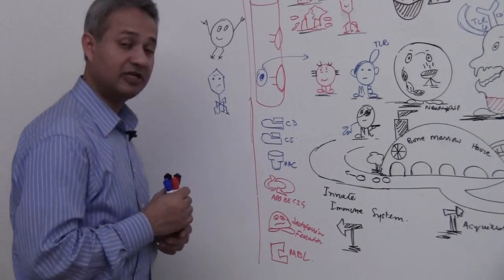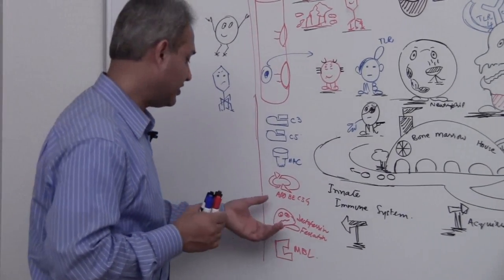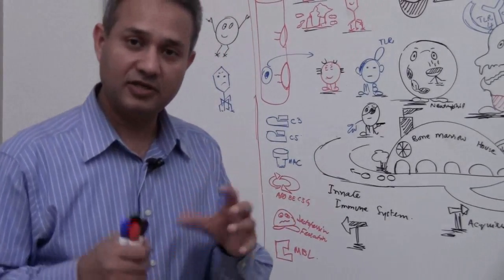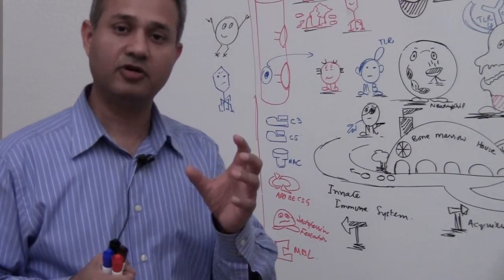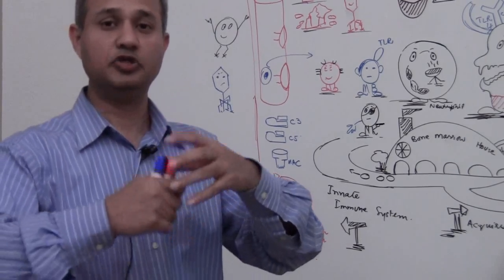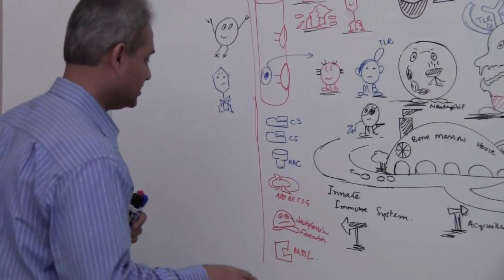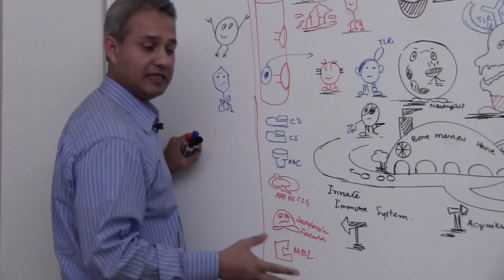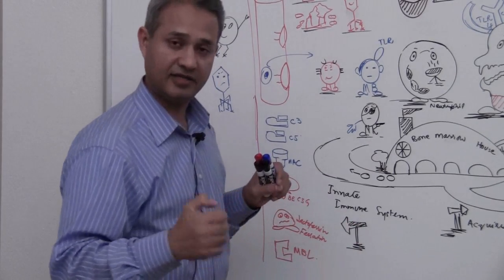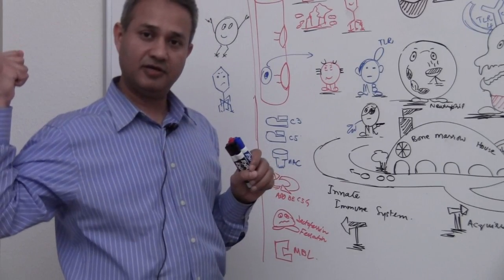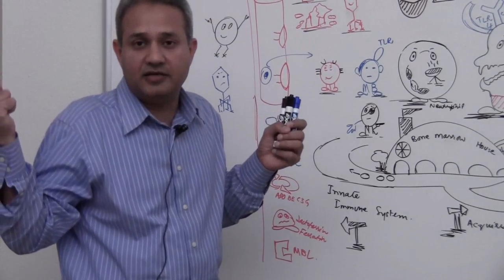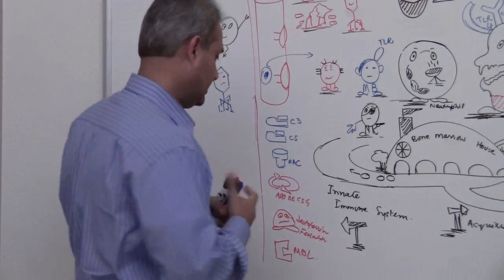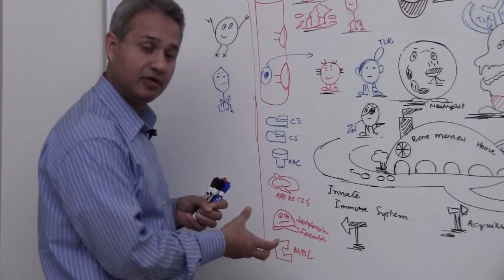Then we have lactoferrins and ferritins, very important things. Remember, for bacteria to grow, bacteria love iron, they want to eat iron, they use iron. So what happens is these two guys, lactoferrins and ferritins, they chelate the iron, they eat up the iron, they grab the iron. So when the bacteria doesn't get the iron, bacteria cannot replicate and grow. That is how they help. These are proteins.